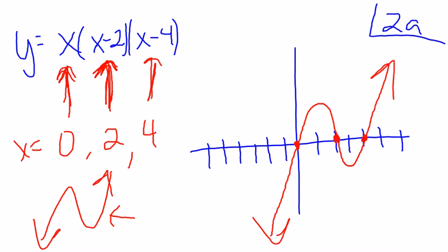It says be sure to include all intercepts. Since the y-intercept is zero, clearly right there, I'm good to go. So that's all for that one.